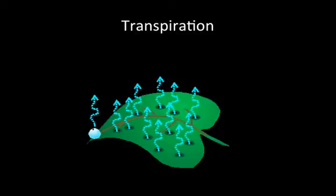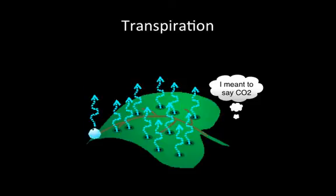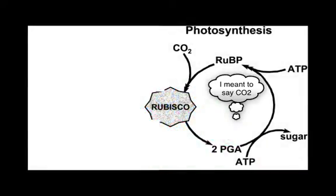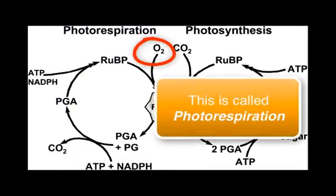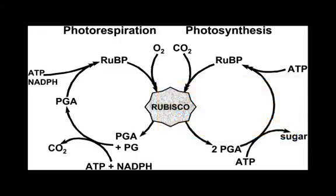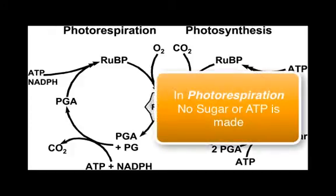This is when things go wrong with the plant. Instead of fixing CO2 to make sugar, as in the normal process, the Calvin cycle begins to fix oxygen instead. Without the introduction of a new carbon source, the ATP, NADPH, and the RuBP all get used up, and no sugar is made. There's a loss of energy to the plant in photorespiration. There are a few hypotheses out there to explain why plants do this when it's detrimental — while it is trying to conserve water, it saps energy from the plant, and no sugar and no ATP is made. Luckily, photosynthesis occurs more often than photorespiration.